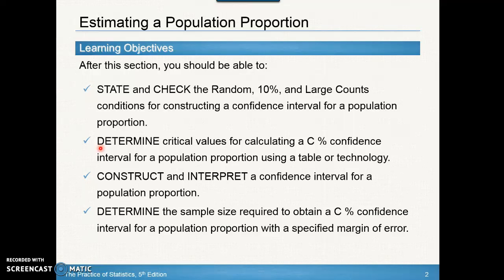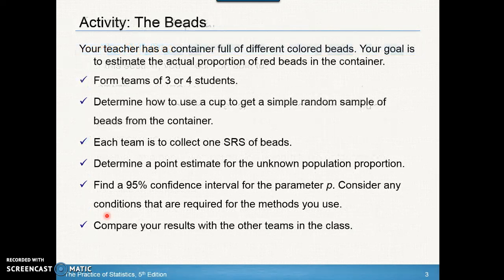We're going to determine critical values, construct and interpret confidence intervals, and determine a sample size needed to obtain a confidence interval with a specified margin of error. We're basically taking what we learned in section 7.1 and applying it specifically to population proportions.